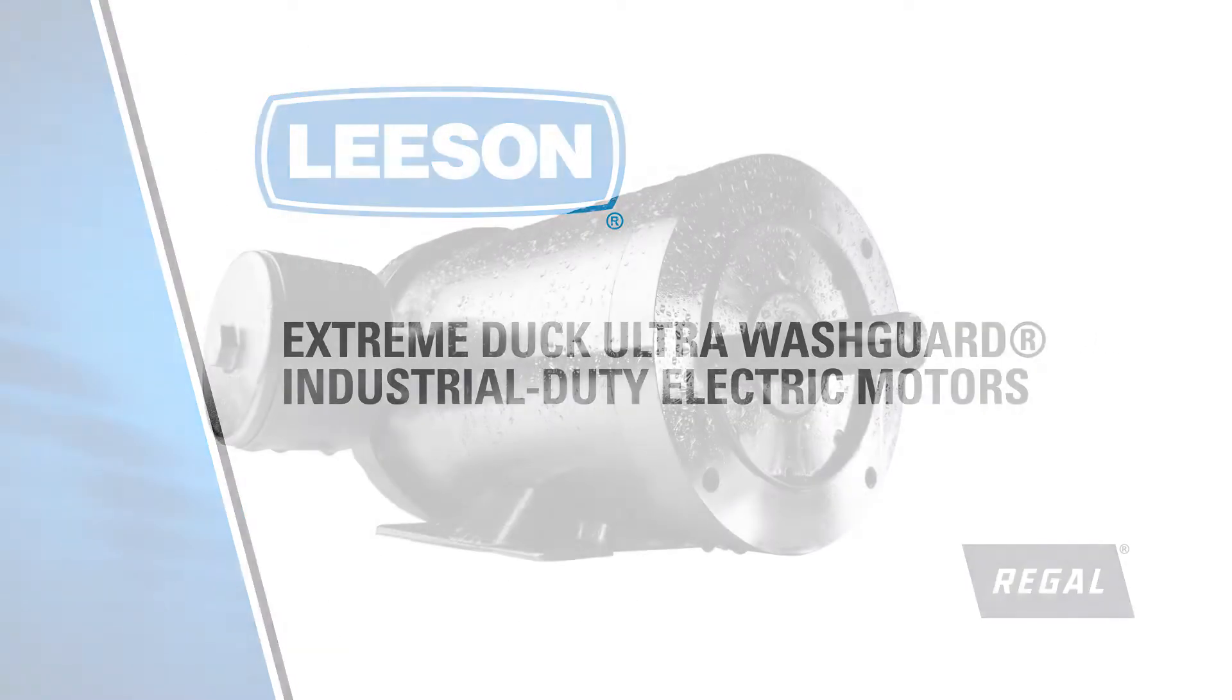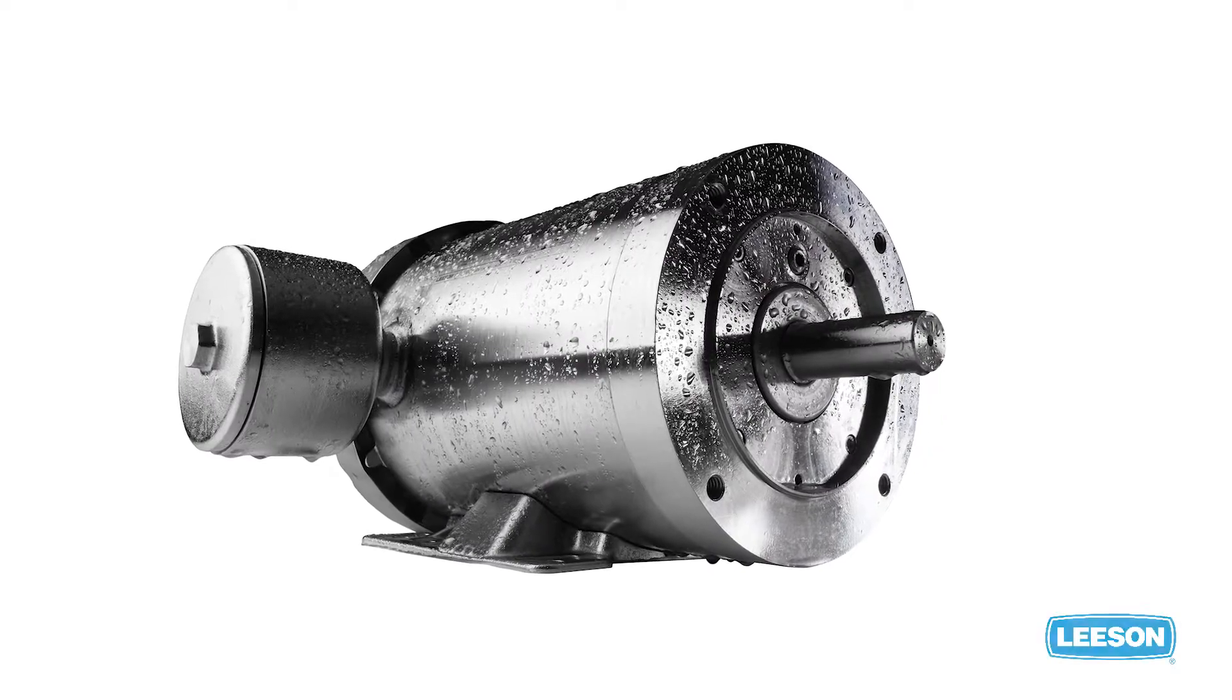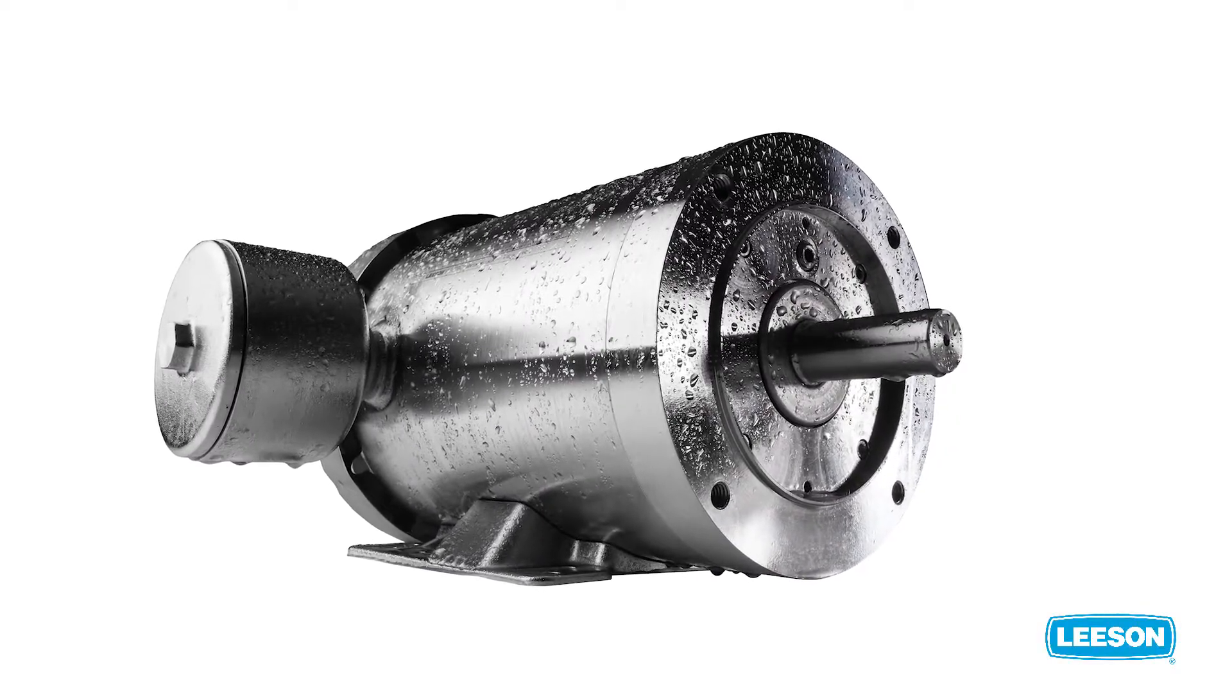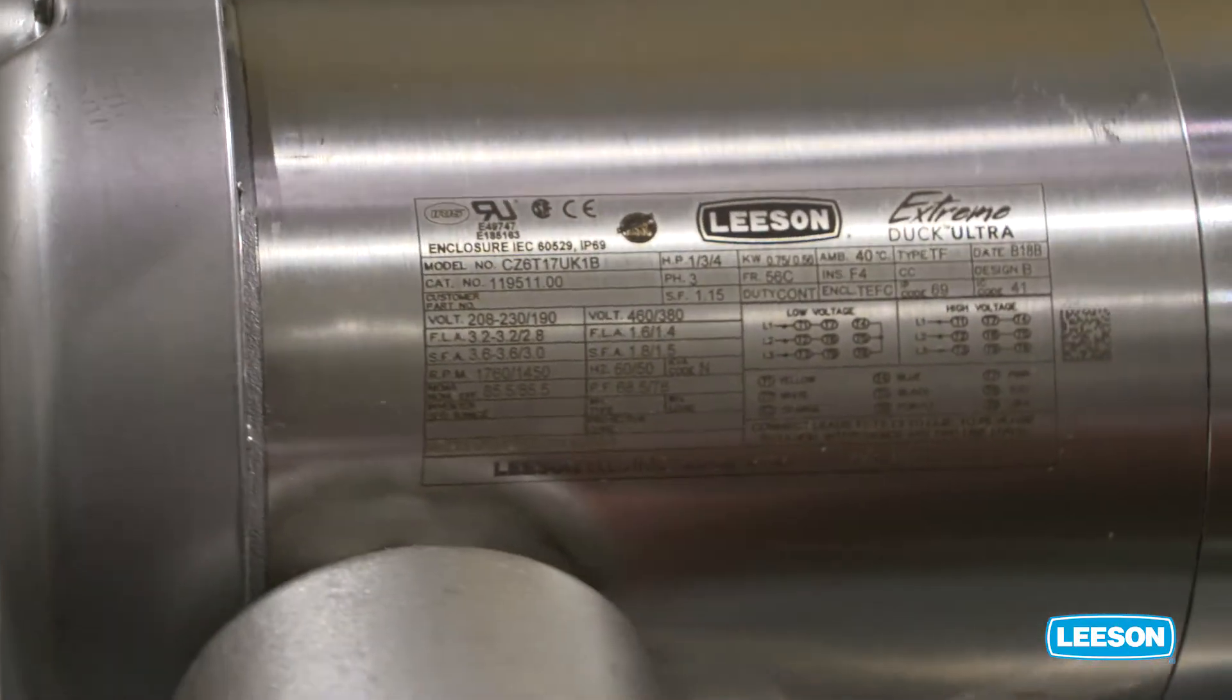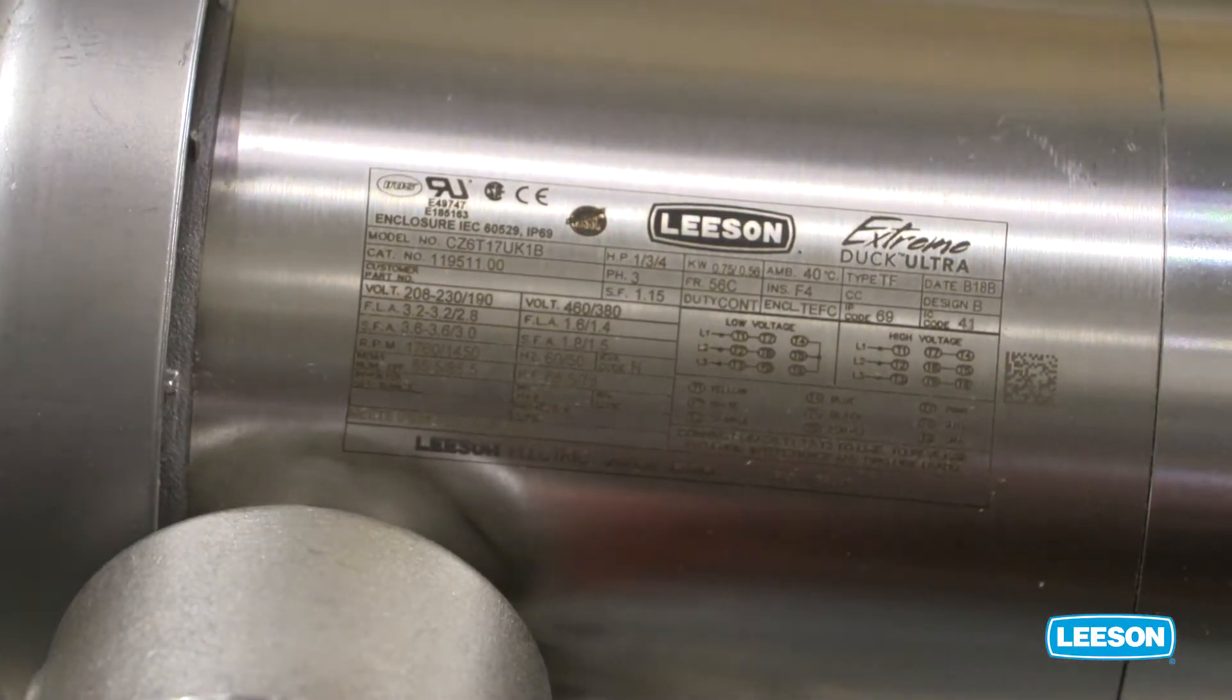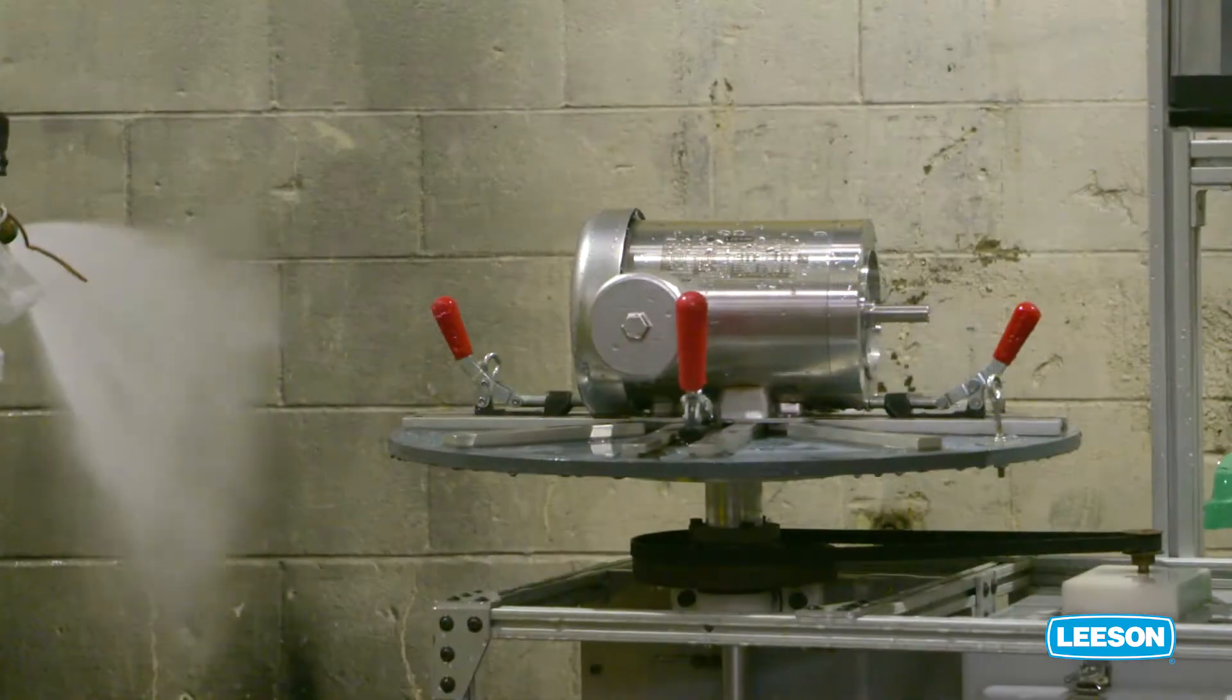Food processing equipment poses unique sanitation challenges. Wet operating conditions and wash-down requirements need specially designed equipment, such as the Leason IP69 UL-certified Extreme Duck Ultra stainless steel food safety motor.